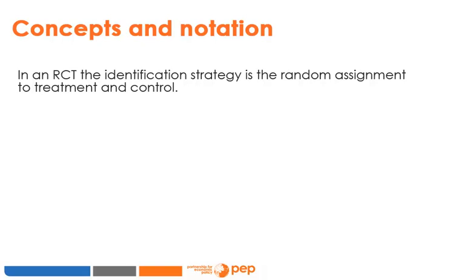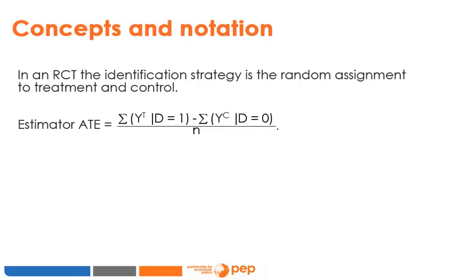The identification strategy refers to the set of tools or methods that enable us to use observable quantities to measure the causal effects of a treatment. In an RCT, the identification strategy is the random assignment to treatment and control, because it allows us to use observed average outcomes to measure causal effects. The statistical procedure — the formula used to obtain a measure of these causal effects — is called an estimator. A very simple estimator of the average treatment effect is just the difference between the two sample averages in the follow-up data.